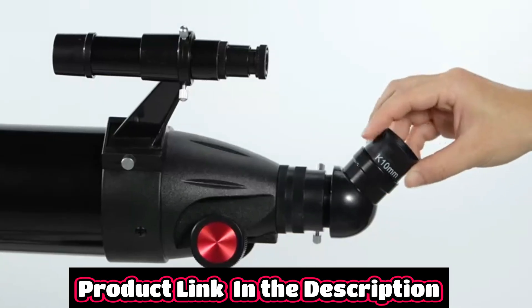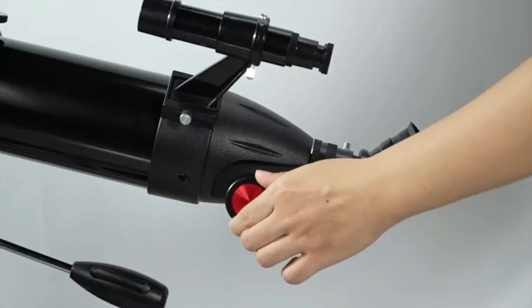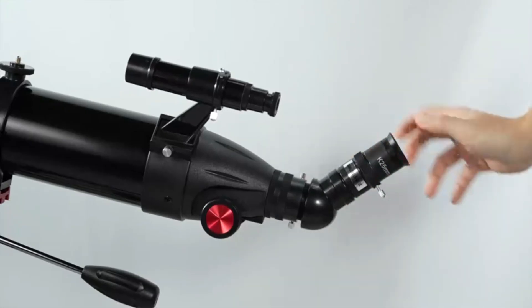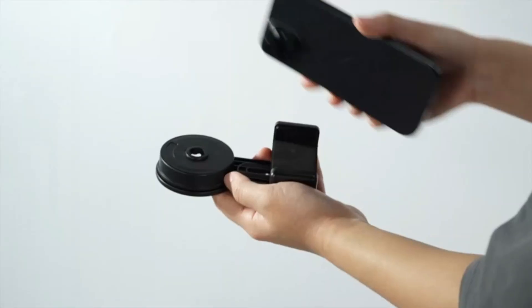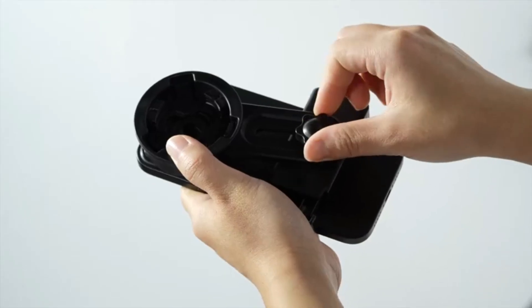Magnification 36x450x, this telescope for adults features three eyepieces, 25mm-10mm-6mm, and a 3x Barlow lens, offering 36x450x magnification with a 900mm focal length. It includes a 5x24 finderscope, phone adapter, and a stargazing mount.